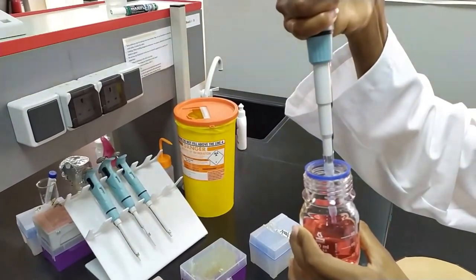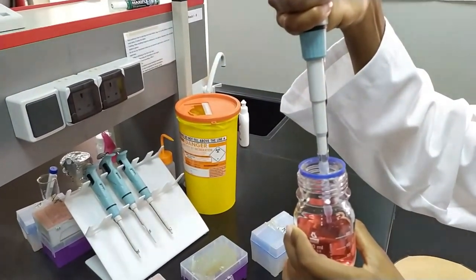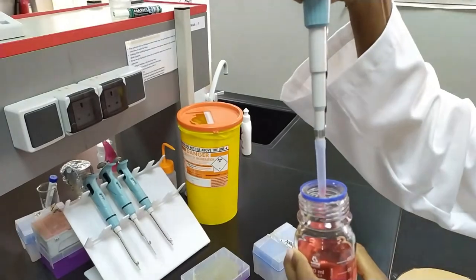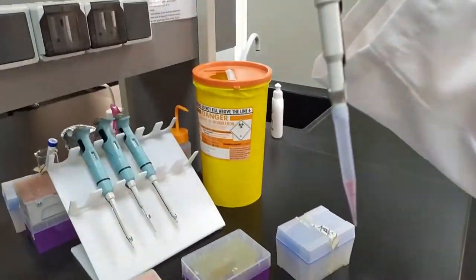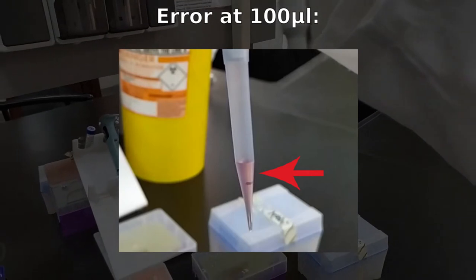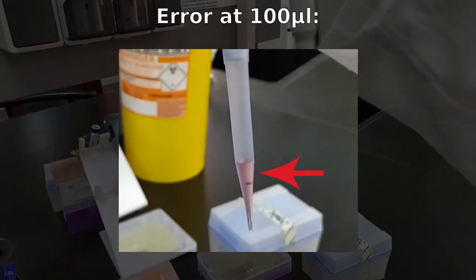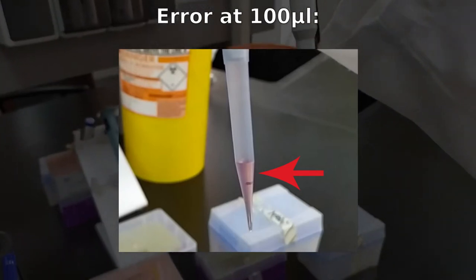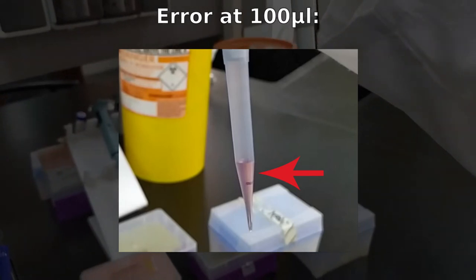Here, Oconia is going to press the plunger all the way to the second stop and then slowly release it to take up the liquid to see how much extra liquid there is in the tip. Clearly, poor technique will yield poor results.